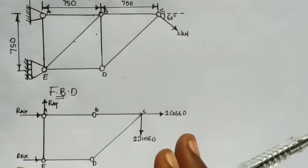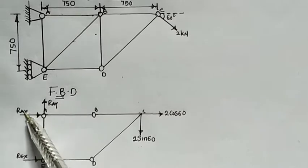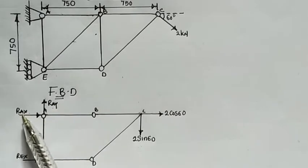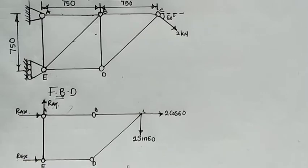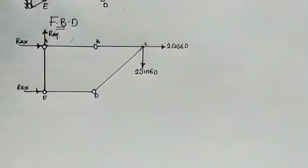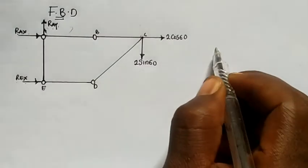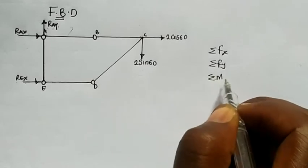The first step is to draw the free body diagram. The next thing is to calculate the reactions - we need to find R_Ax, R_Ay, and R_Ex. R_Ax is the reaction at point A along the x-axis, R_Ay is the reaction at point A along the y-axis, and R_Ex is the reaction at point E along the x-axis. We use the three conditions for equilibrium: summation of F_x, summation of F_y, and summation of moments about a point - all equal to zero.